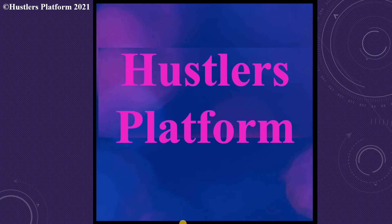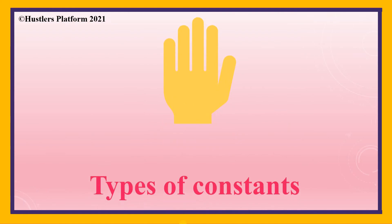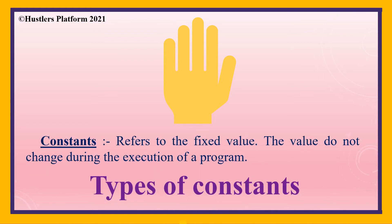Hello everyone, very warm welcome to Haslas platform. This is Madhvi. The topic of this video is types of constants. We will learn about constants and types of constants. Basically, constants means a fixed value — a value that does not change during the execution of a program is called a constant.